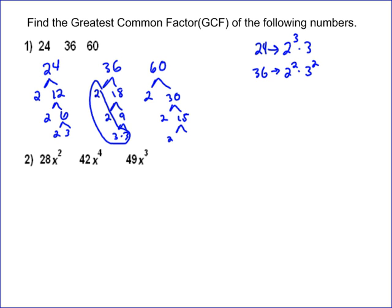2 times... 2 doesn't go into 15. 3 does 5 times. So the prime factorization of 60 is 2 squared times 3 times 5.